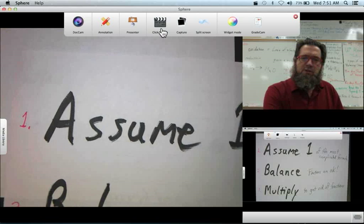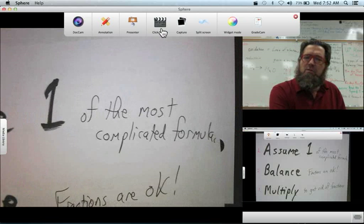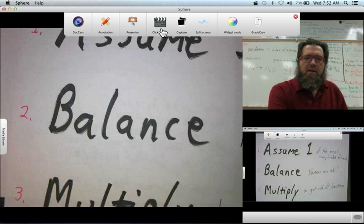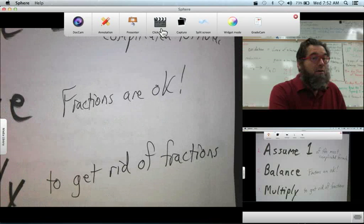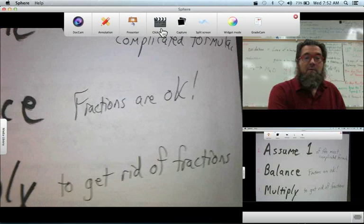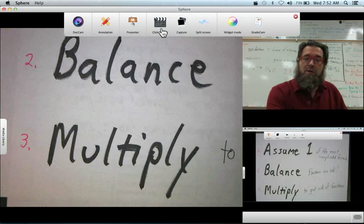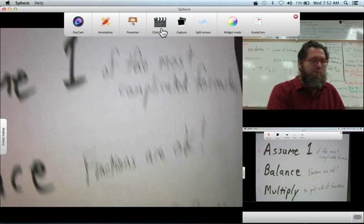First, we will assume one of the most complicated formula. Then, we'll balance. Fractions are okay. And thirdly, we'll multiply to get rid of the fractions, and that will give us our balanced equation.